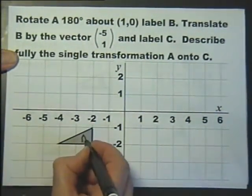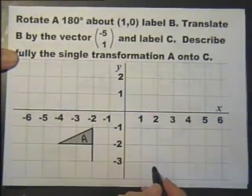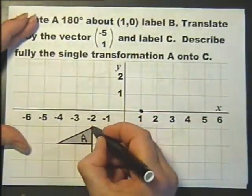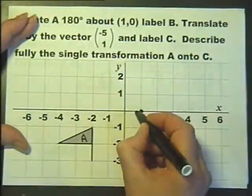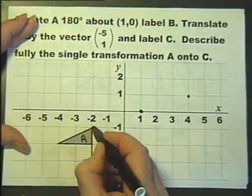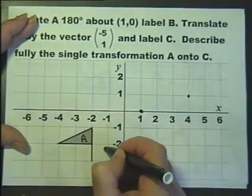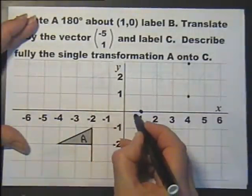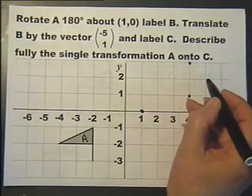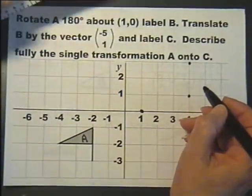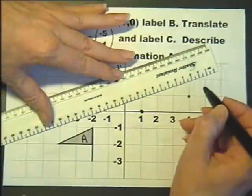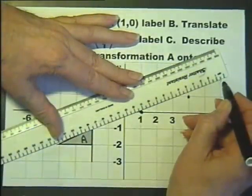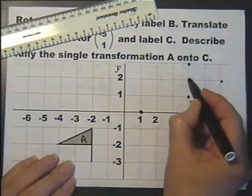Rotate A 180 degrees about the point (1, 0) and label it B. Now if I rotate it, that point is going to end up there, and that point is going to end up there. With 180 degrees, you can just go straight through the centre of rotation and find out where it is. So the flag ends up like that.